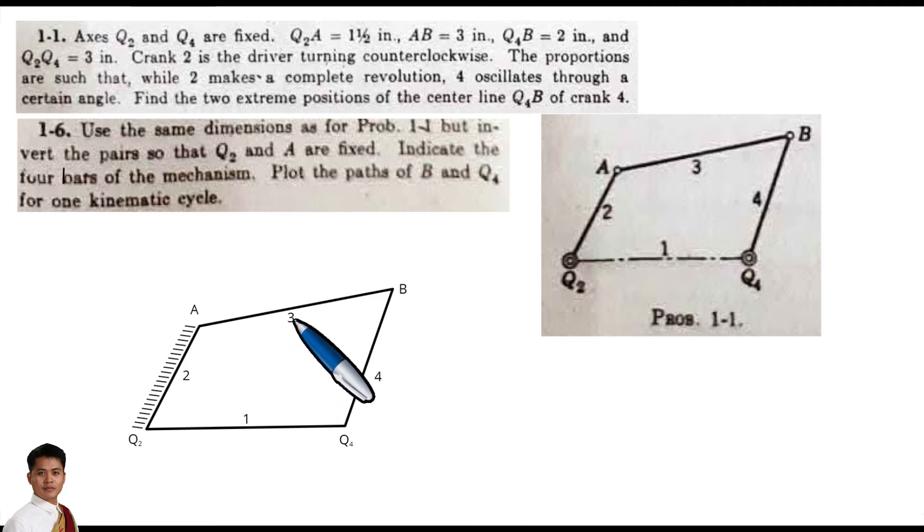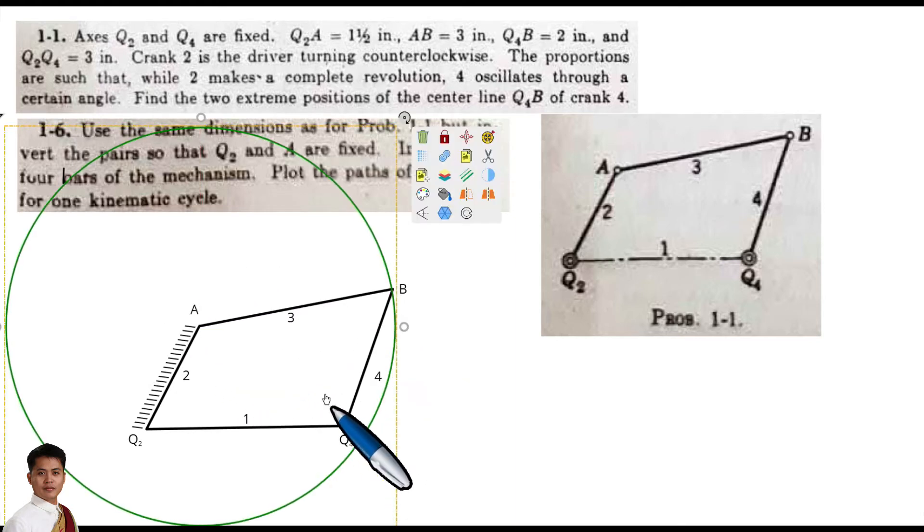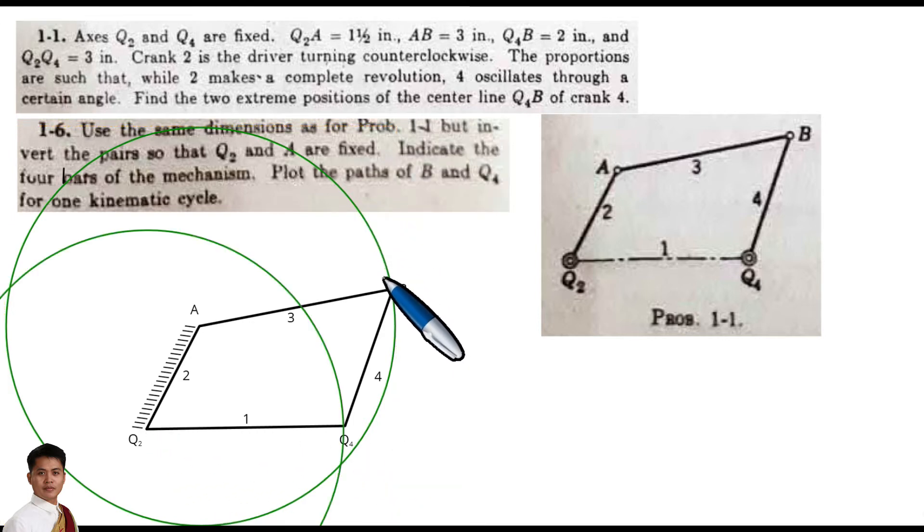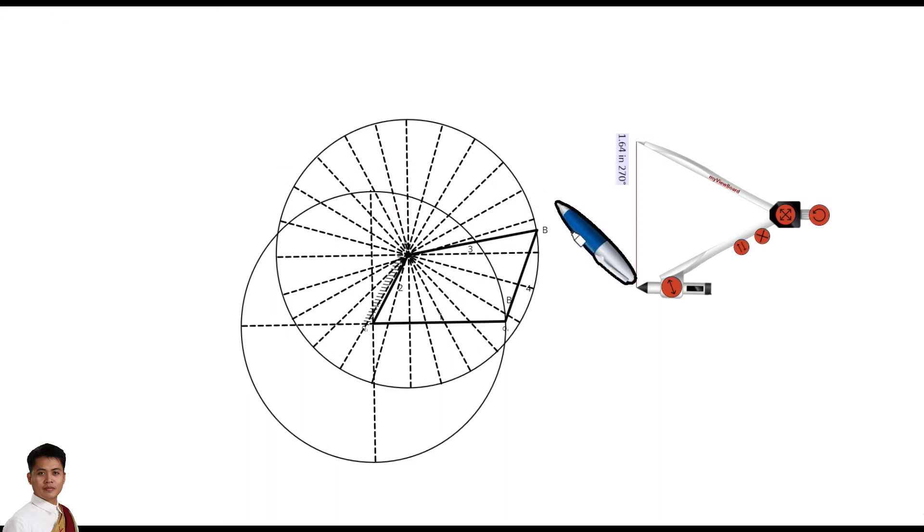So first, let us draw the path of B and Q4. Let us draw a complete circle. The center point for the path of B is at A. Then for Q4, its center of course is at Q2. Then we need to divide the path of B by 15 degrees. So this is our figure for the path of our B.